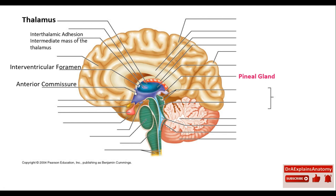This is the pineal gland, also called the pineal body. This is the gland that regulates your sleep and wake cycles. It produces melatonin, which is a hormone secreted by the pineal gland.